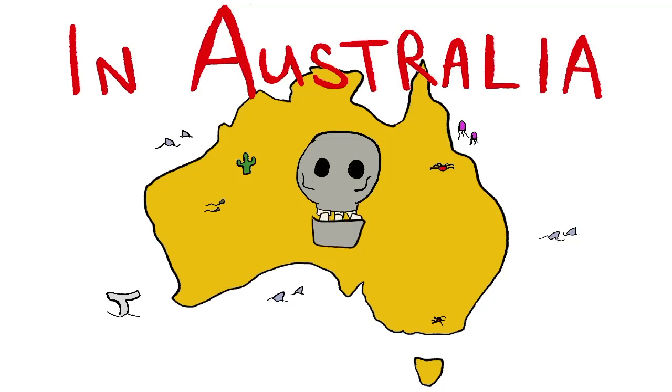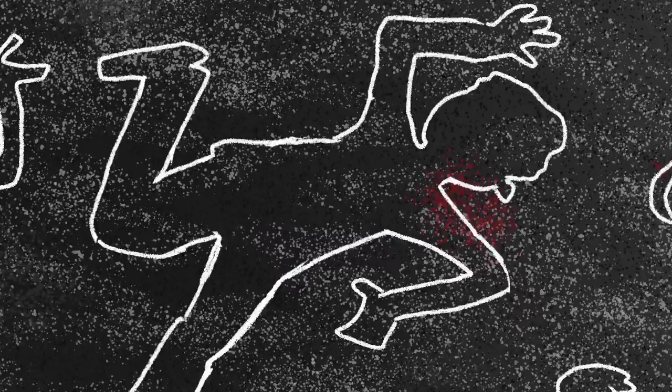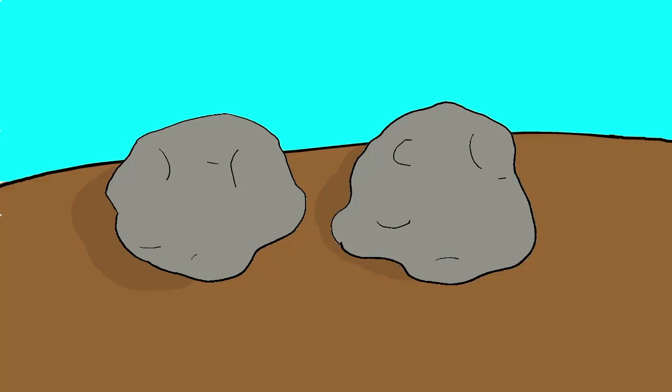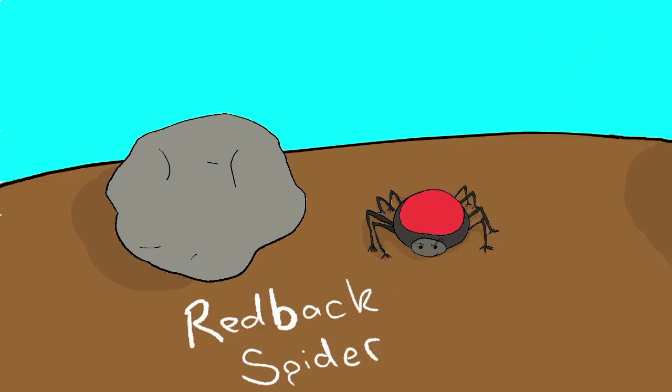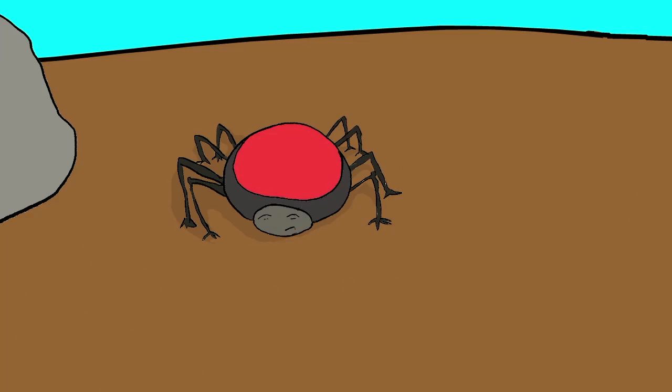In Australia, we've got deadly animals aplenty. We've got funnel-web spiders who'll murder you and your family. Under every second rock is a red-backed spider and they'll kill you just because, I don't know, they're bored or whatever.